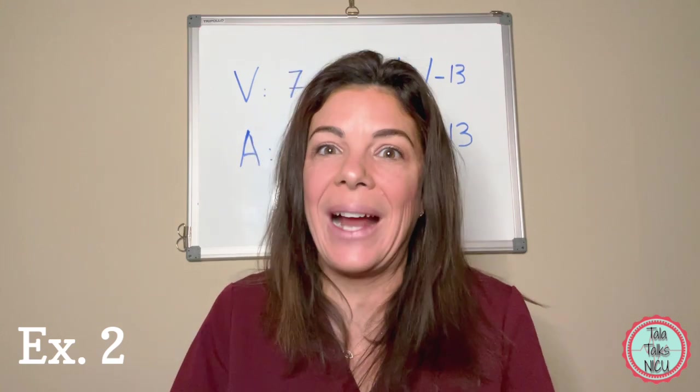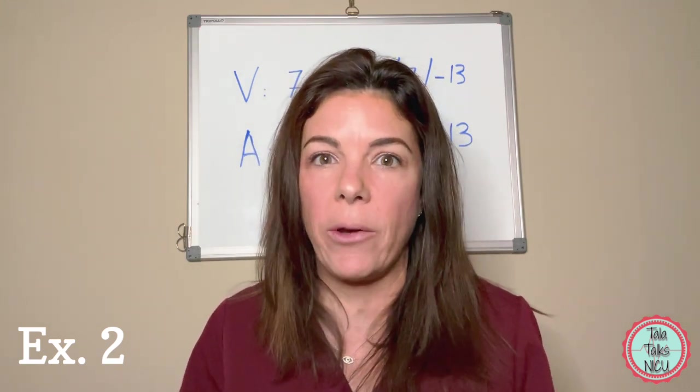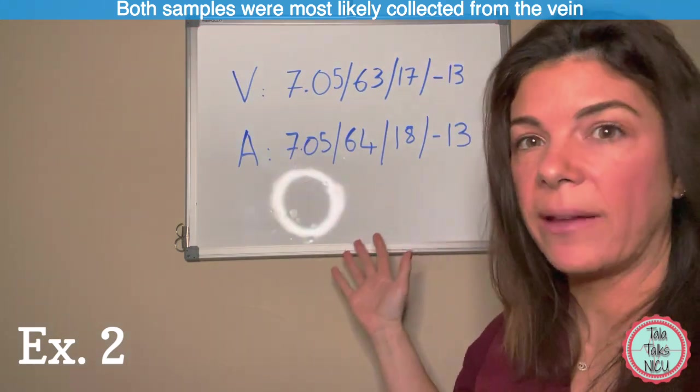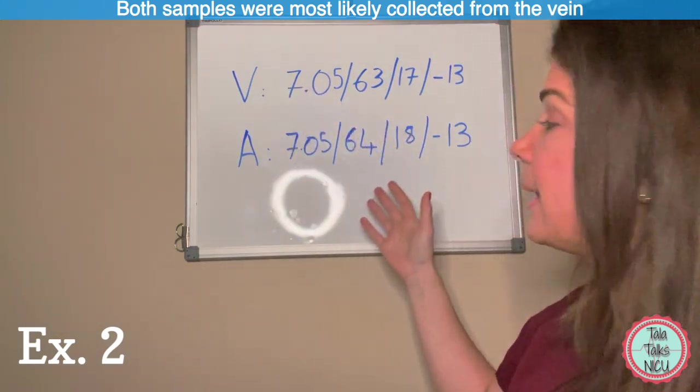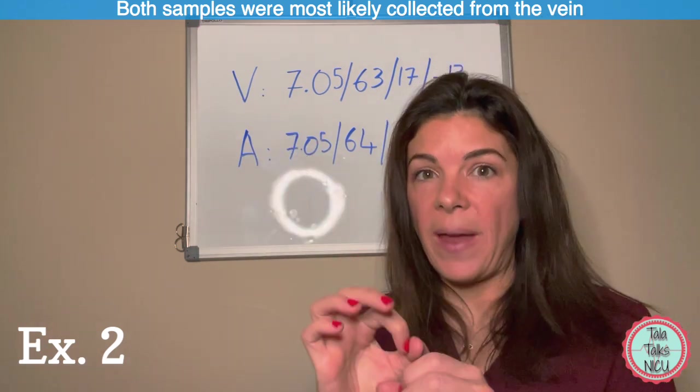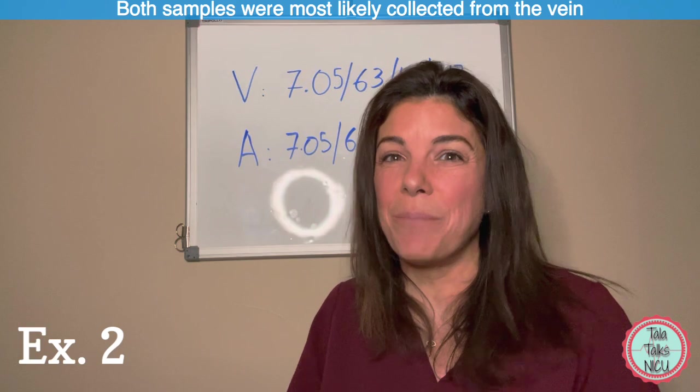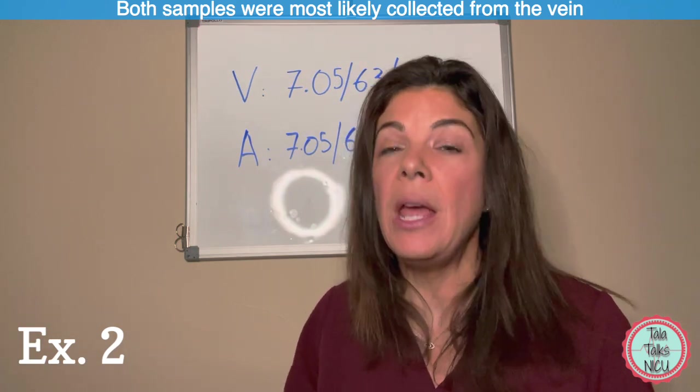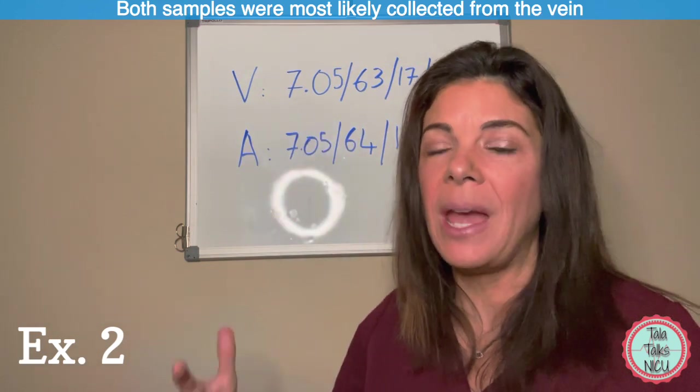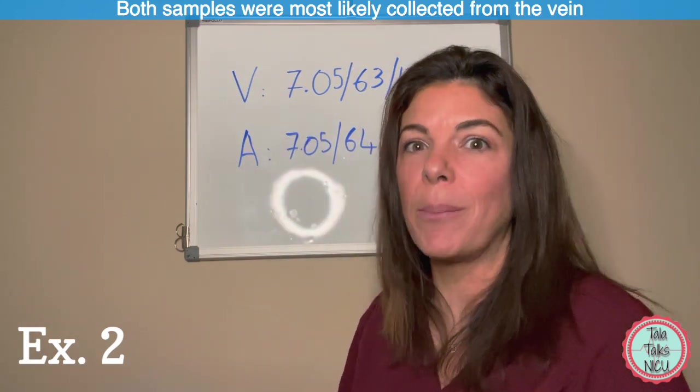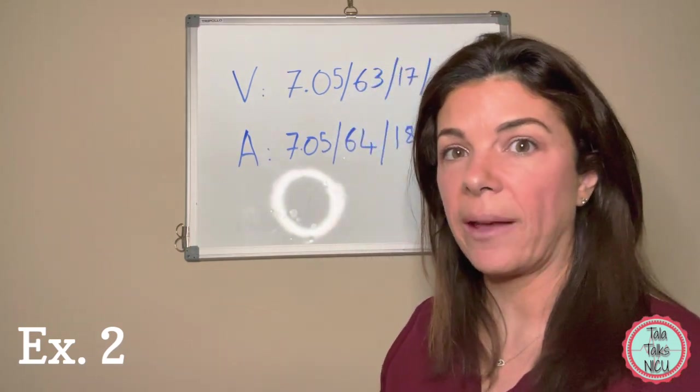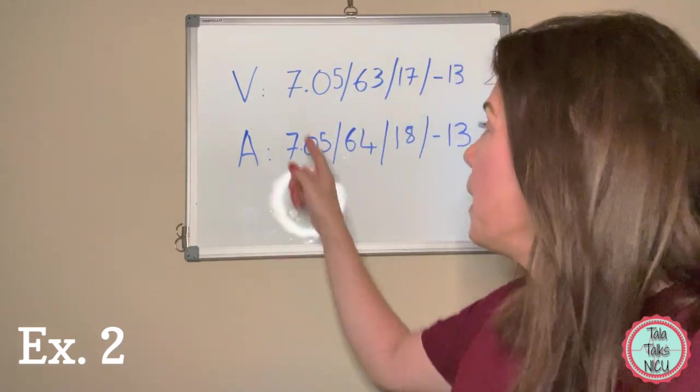If you, for example, checked sodium in exactly the same blood batch five times, there's a really high chance that it's not always going to be exactly the same value. There's always a little bit of variability. Most likely these were collected from the same vessel, and most likely they were both collected from the vein because the vein is much bigger than the arteries and it's much easier to access.